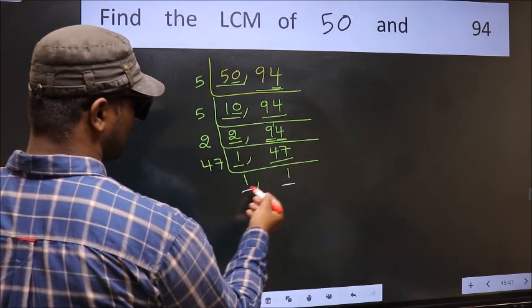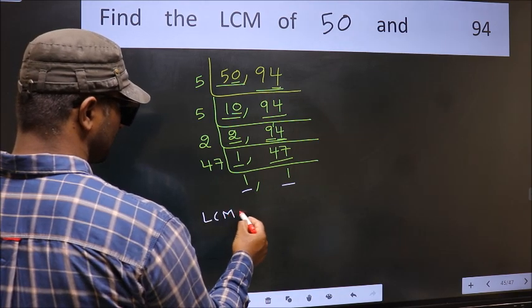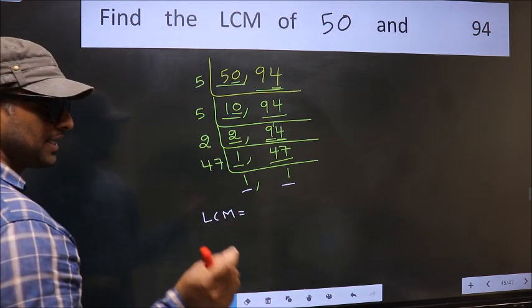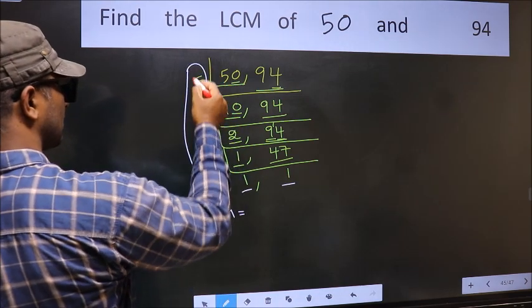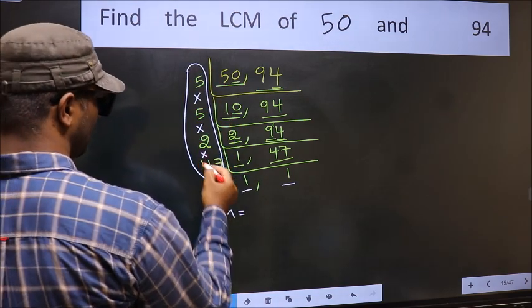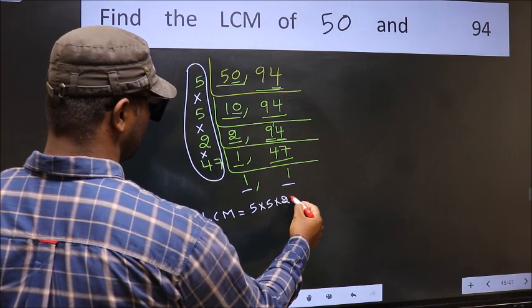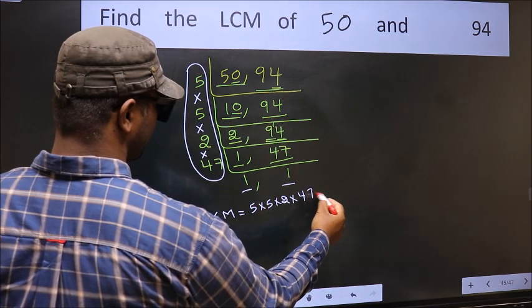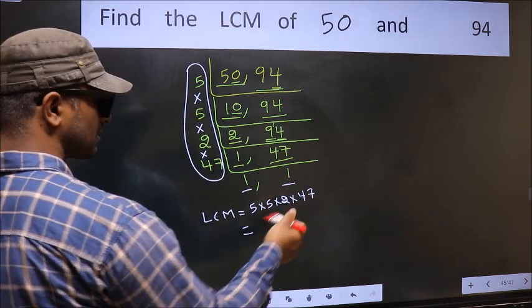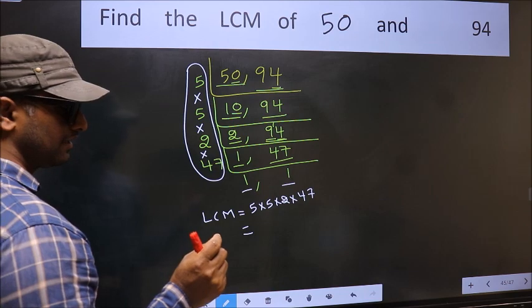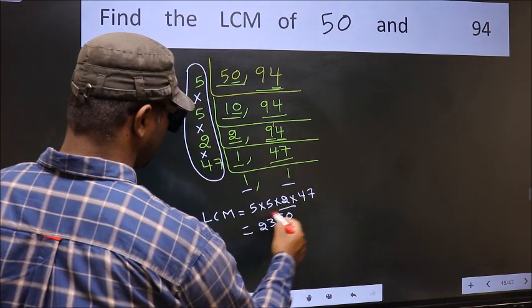So we got 1 in both the places. So our LCM is the product of these numbers. That is 5×5×2×47. When we multiply these numbers we get 2350 is our LCM.